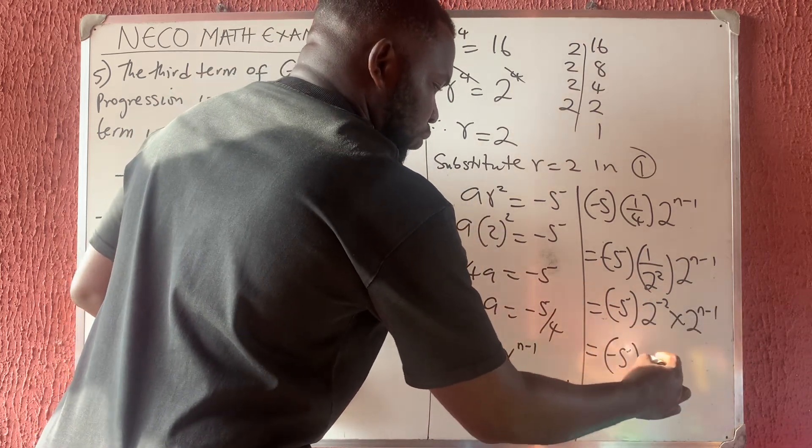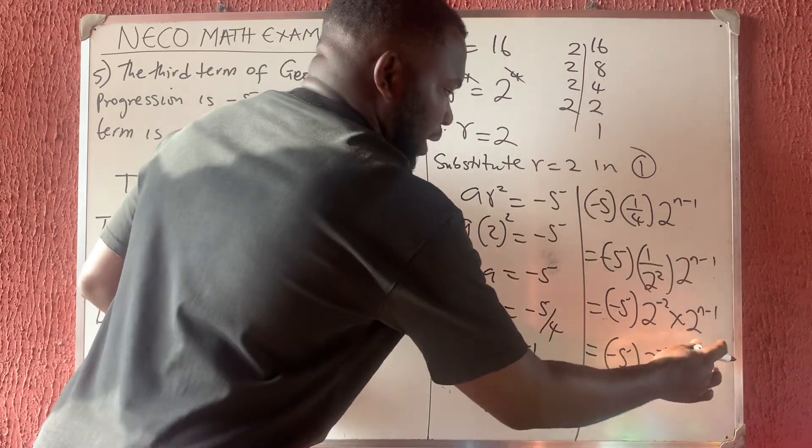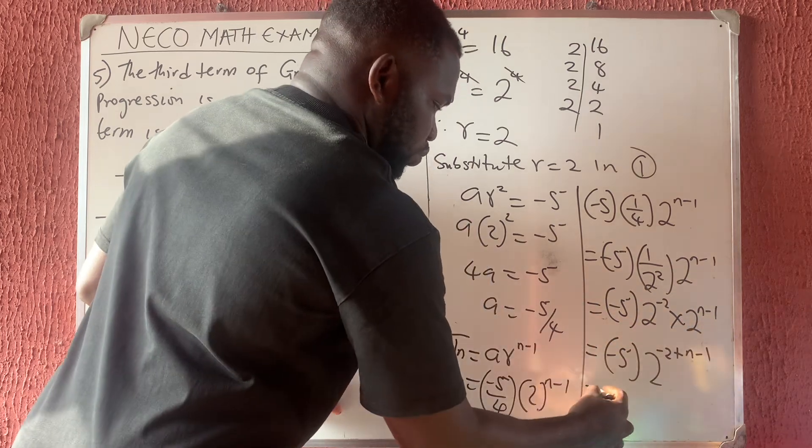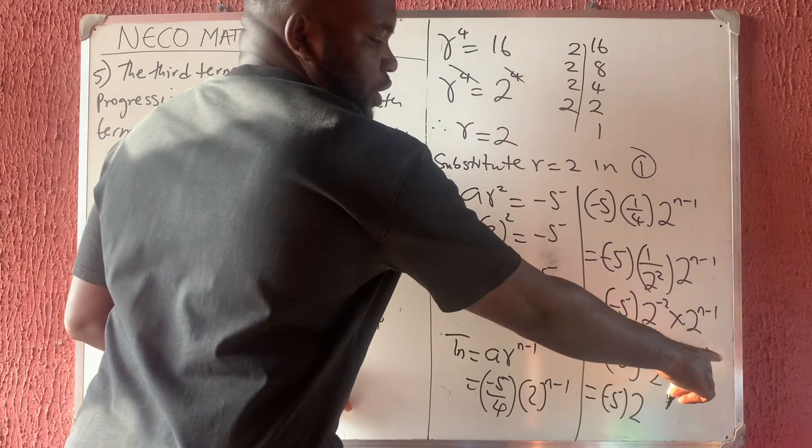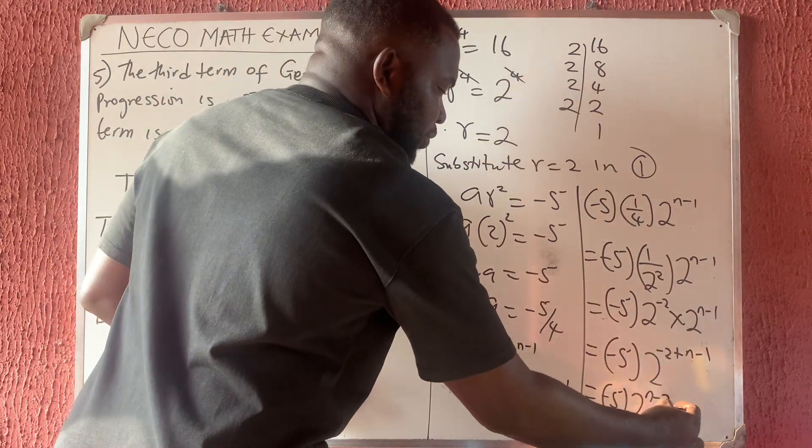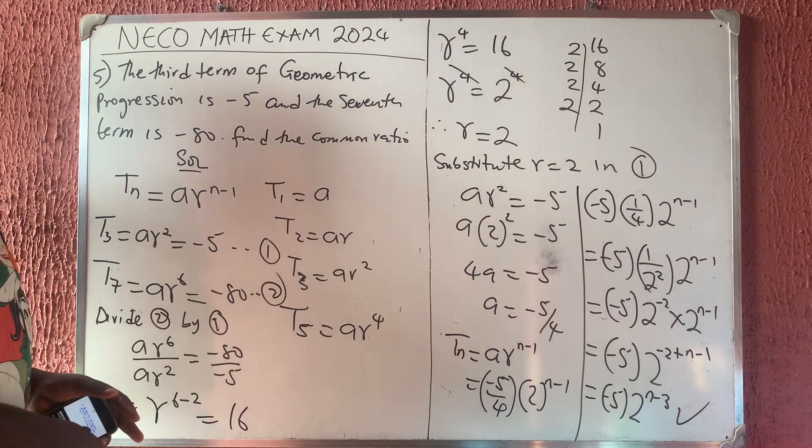Minus 5 into... According to indices, 2 raised to the power minus 2 plus N minus 1. So which is minus 5 into 2 raised to the power... this and this will give us minus 3. So N minus 3. So this is the Nth term of this geometric sequence.